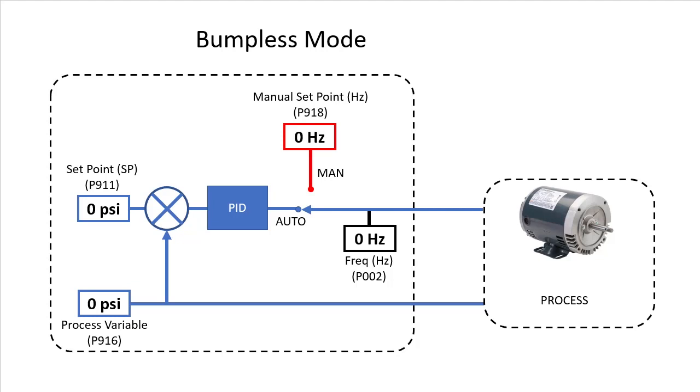So when PID starts, it sees the process variable and the set point are the same and it just goes about the business of maintaining that motor speed. The operator can then safely increase the set point to the desired level.